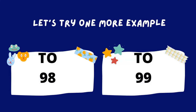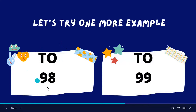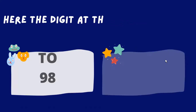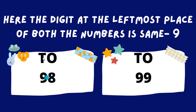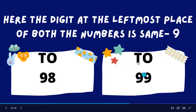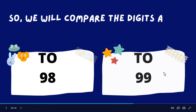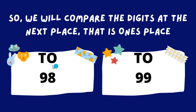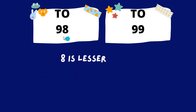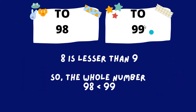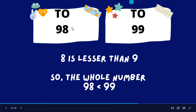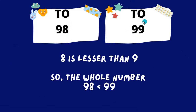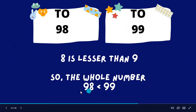Let's try one more example. Let's compare these two-digit numbers: 98 and 99. Here the digit at the leftmost place of both numbers is the same — that is 9. So we will compare the digits at the next place, which is the ones place. Here 8 is lesser than 9, so the whole number 98 is lesser than 99. We can also write this using the less than sign: 98 is lesser than 99.